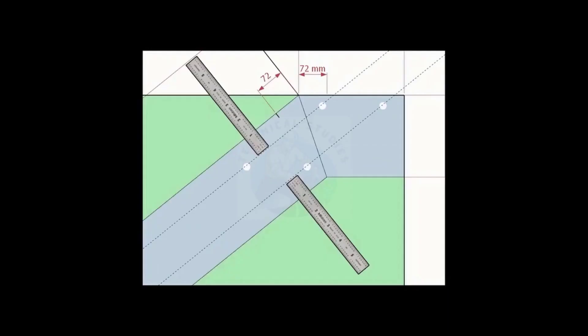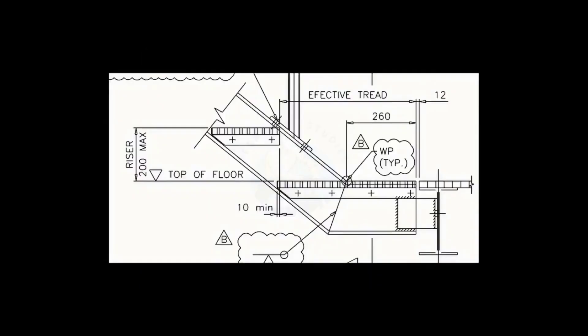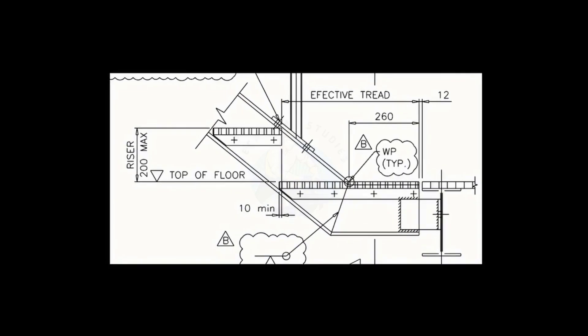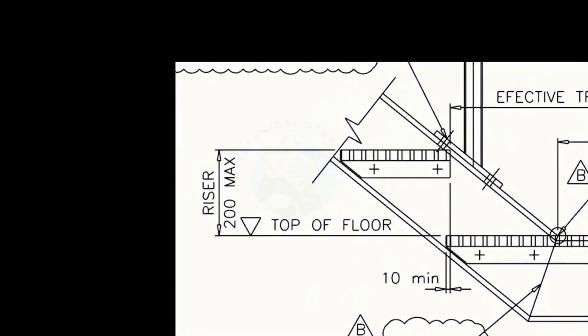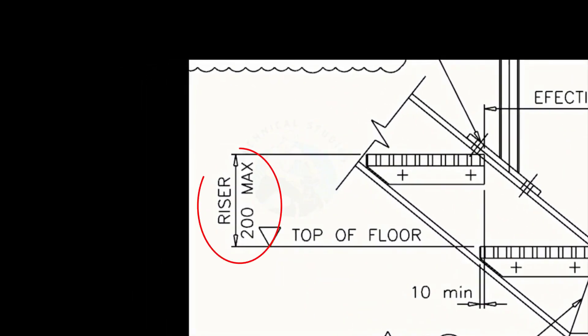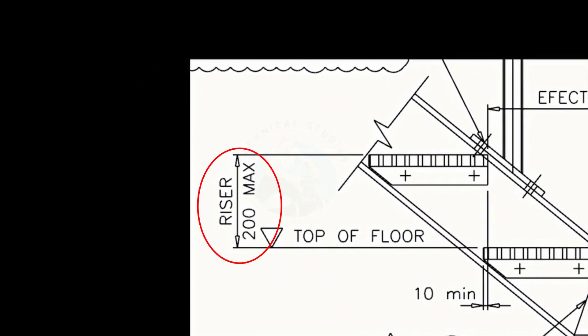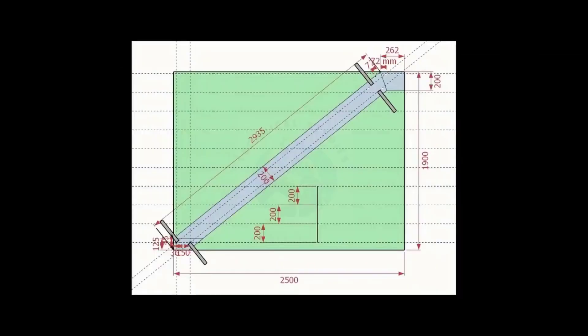Mark this distance on the top side of the layout and draw lines. As we know, the vertical distance between two threads is 200 millimeters — mark parallel distances on the layout in the entire height as shown.